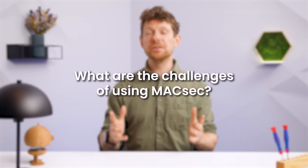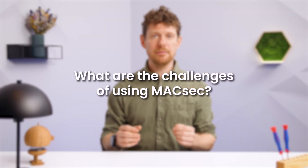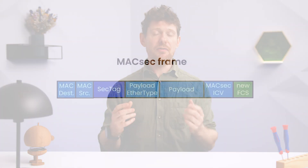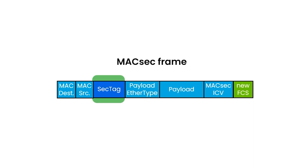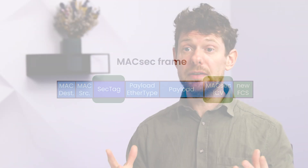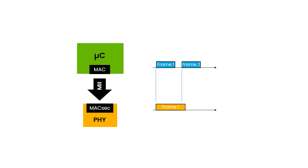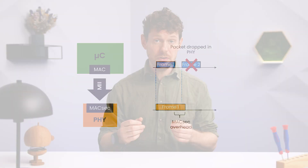What are the challenges of using MACSEC? To enhance the security of PHY devices, MACSEC adds a SEC tag and ICV to the frames. This additional information increases the frame size, which leads to packet drops between XMII and the physical layer, resulting in incomplete data transmission.